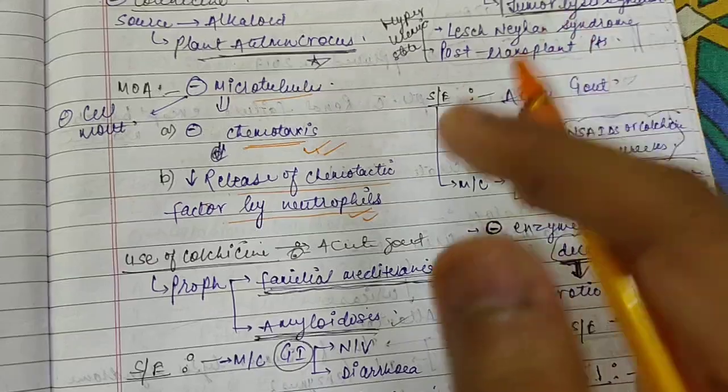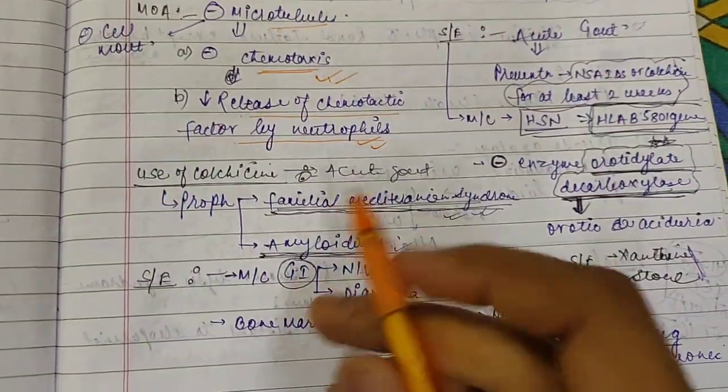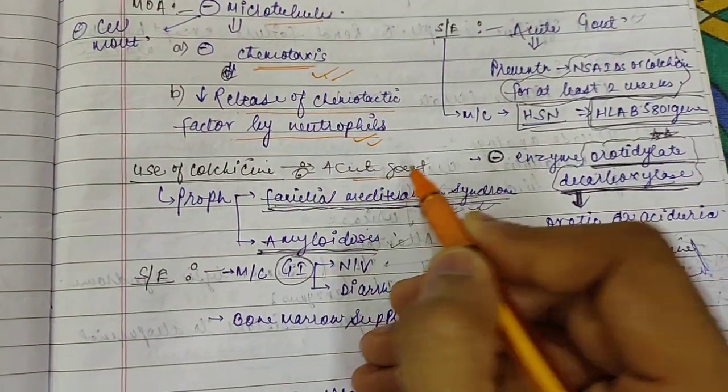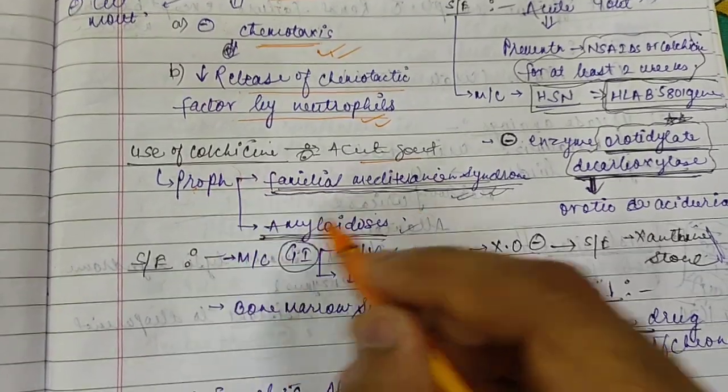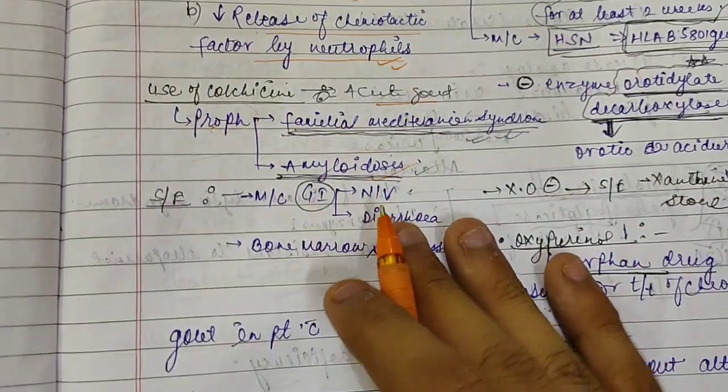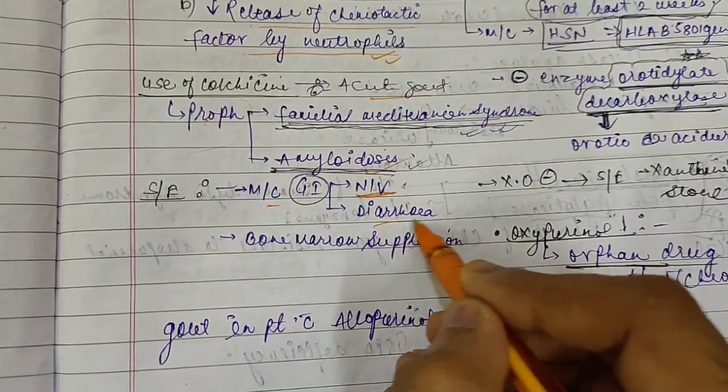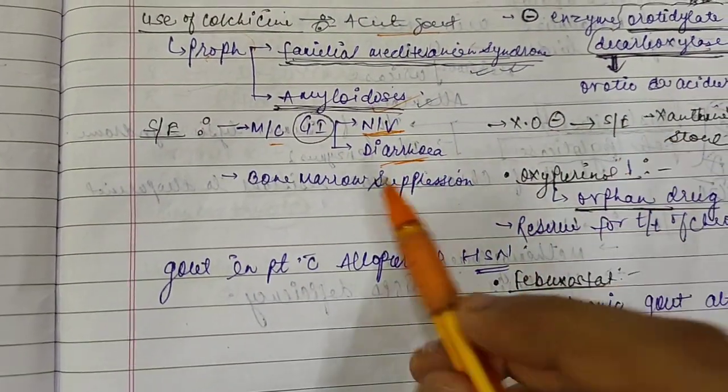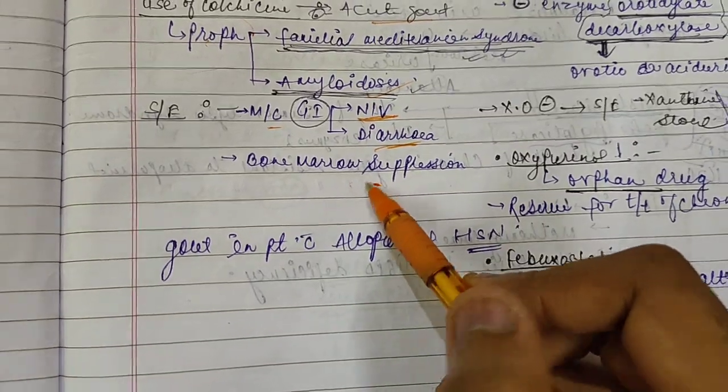Now uses of colchicine: first use is acute gout, then it can also be used for prophylaxis of familial Mediterranean syndrome and amyloidosis. Side effects: most common side effects are GI—nausea, vomiting, and diarrhea. Bone marrow suppression is also one of the side effects of colchicine.